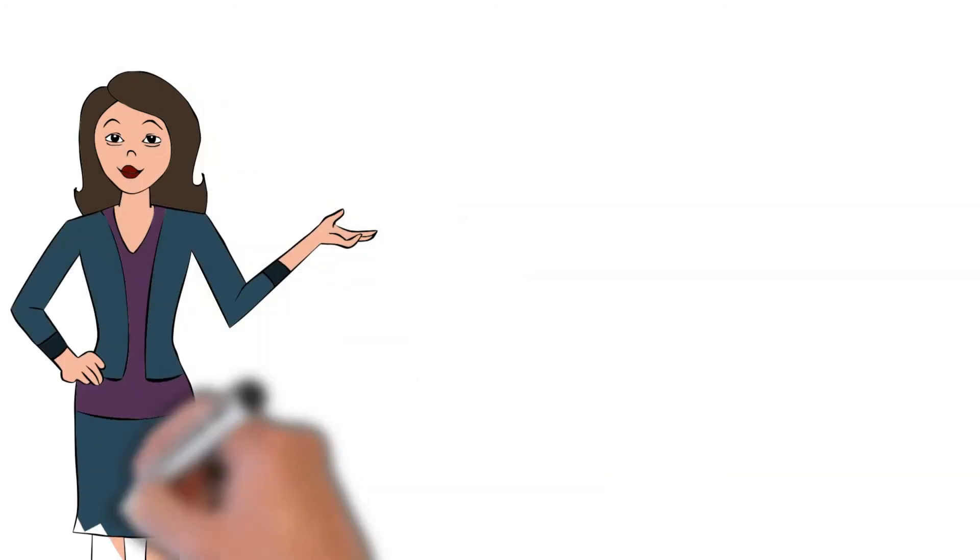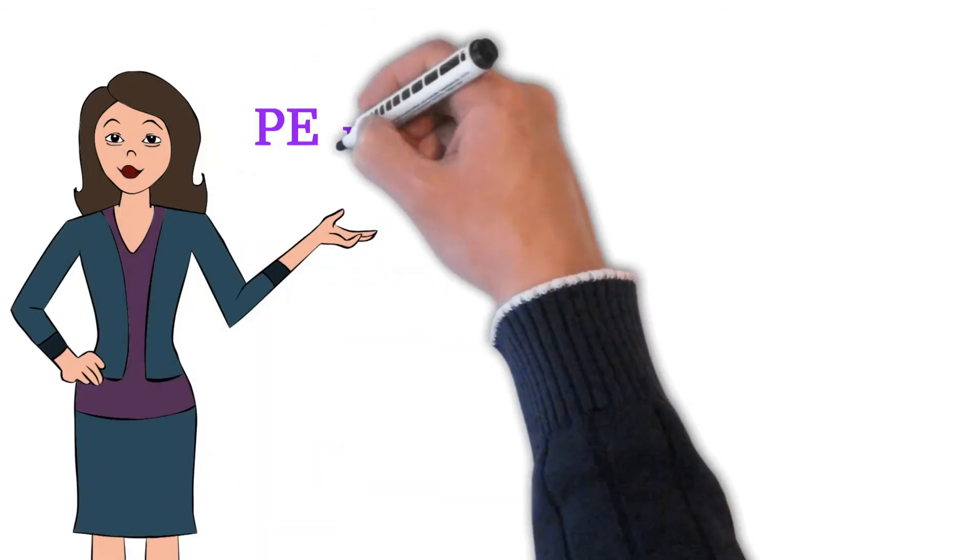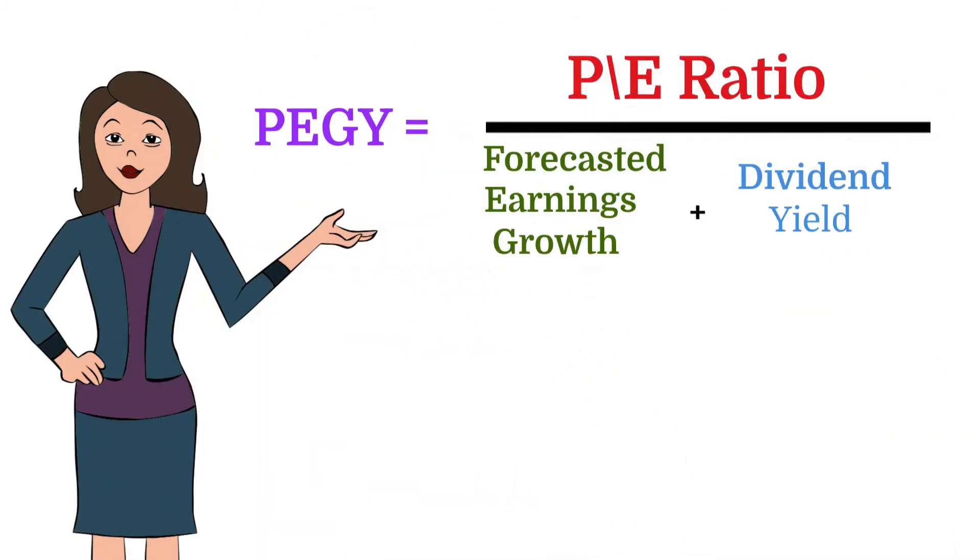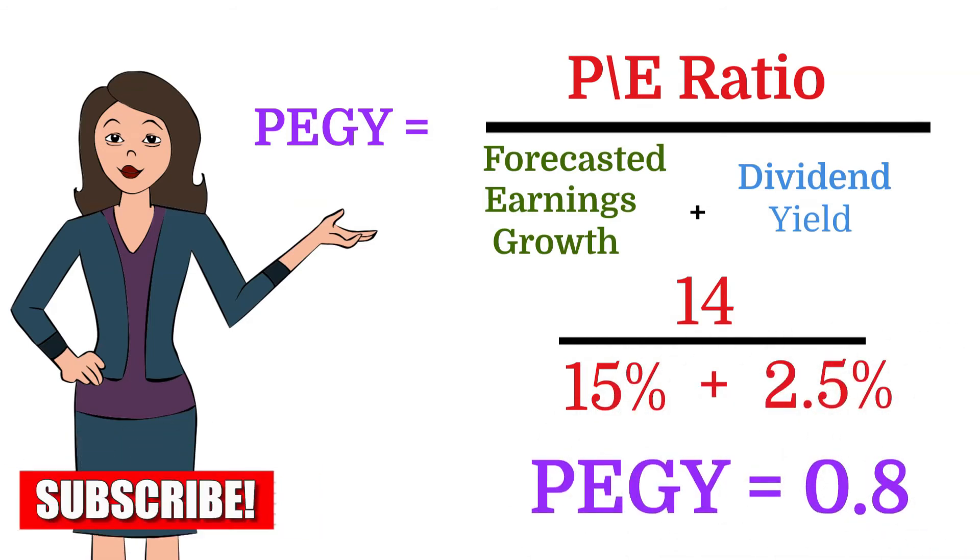The PEGGY ratio is calculated the same way as the PEG ratio, but the dividend yield is added to the denominator. For example, suppose a company has a PE ratio of 14, a 5 year projected earnings growth of 15%, and a dividend yield of 2.5%. With these figures, the company has a PEGGY ratio of 0.8.